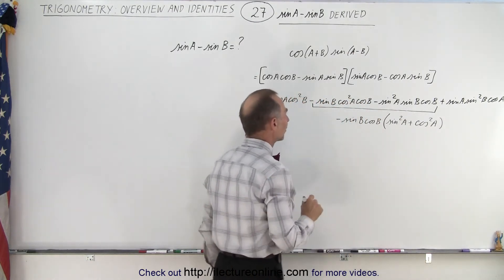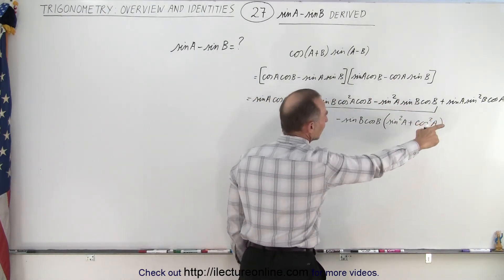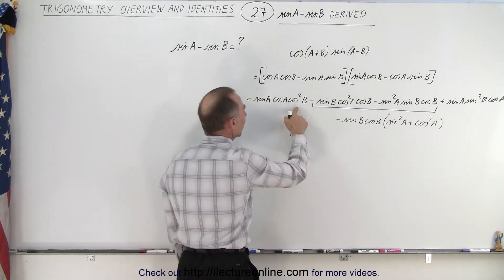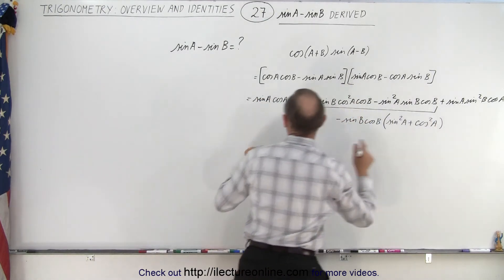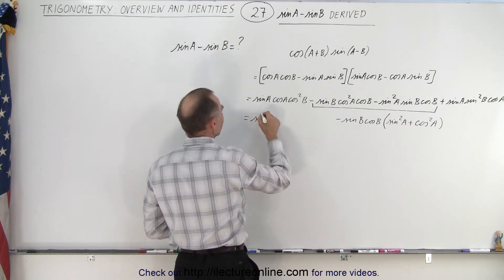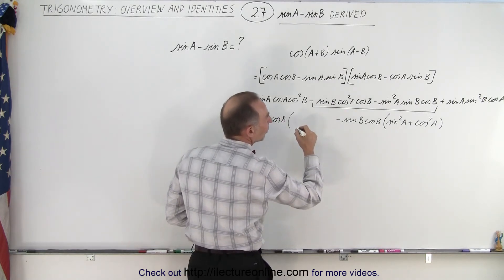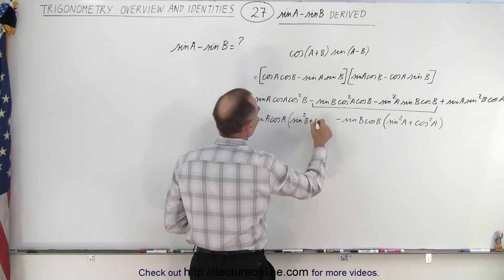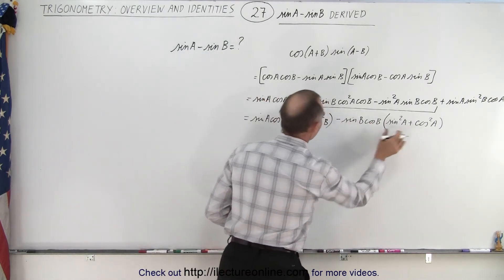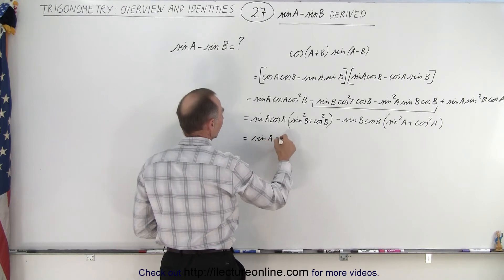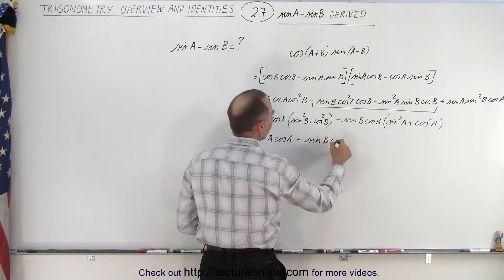I took out the negative sign and put it in front. Now looking at the first two terms, they have cosine squared b and sine squared b, but they also both have sine a cosine a as a common factor. So factoring those out gives us sine a cosine a times sine squared b plus cosine squared b. That also equals 1, so we end up with sine a cosine a minus sine b cosine b.